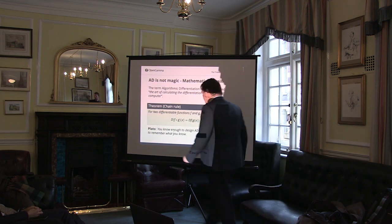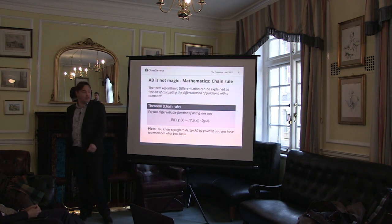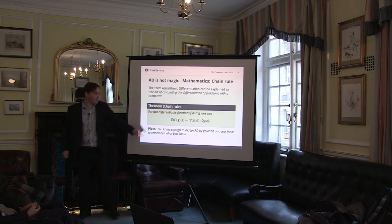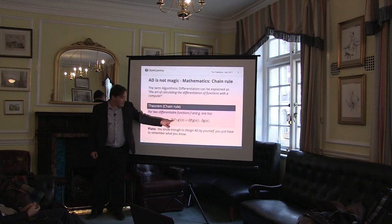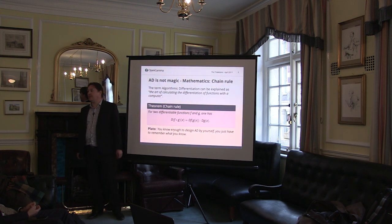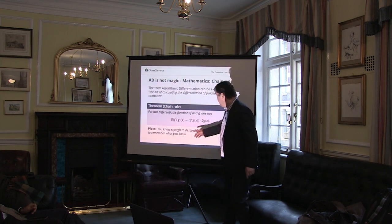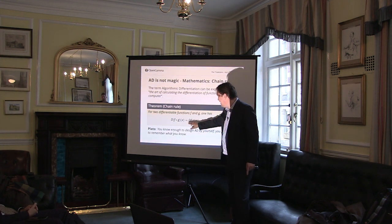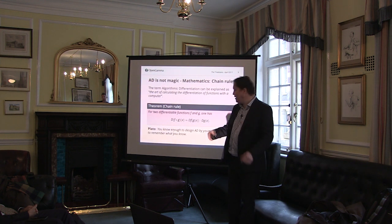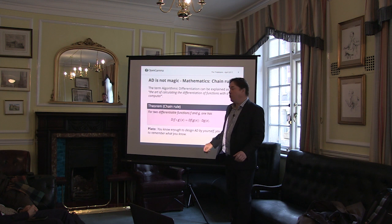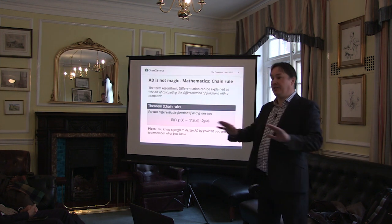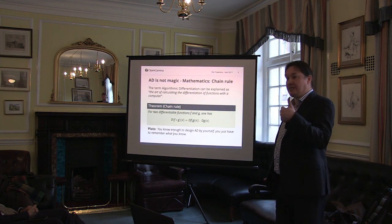This is an extremely powerful result when you look at it with computer science eyes. Suppose you have finished developing the computation of whatever capital, present value, or whatever number. You have implemented all those functions in your computer — F, G, and whatever else. When you look at the other side of the chain rule, it's exactly the same architecture. So you don't have to think again or change the architecture. You can reuse it. That's amazingly powerful.